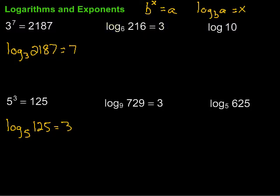So here we have a couple logarithms and I want to convert them into exponential form. So for this one, remember the log base 6 of 216 is equal to 3. What that means is 6 to the 3rd power is equal to 216.